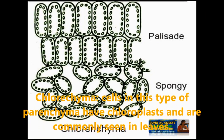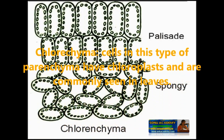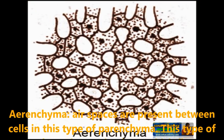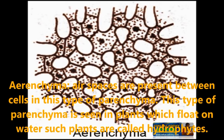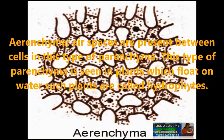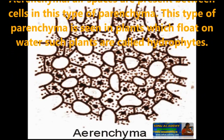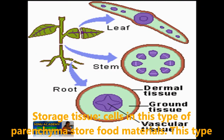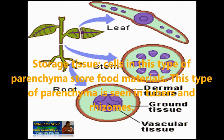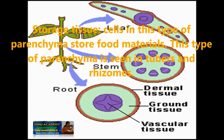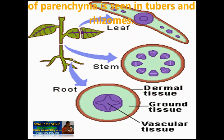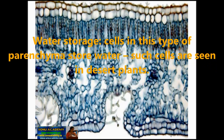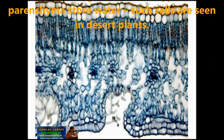Chlorenchyma: cells in this type of parenchyma have chloroplasts and are commonly seen in leaves. Aerenchyma: air spaces are present between the cells; this type of parenchyma is seen in plants which float on water, such as hydrophytes. Storage tissue: cells in this type of parenchyma store food material and are seen in tubers and rhizomes. Water storage: cells in this type of parenchyma store water, and such cells are seen in desert plants.